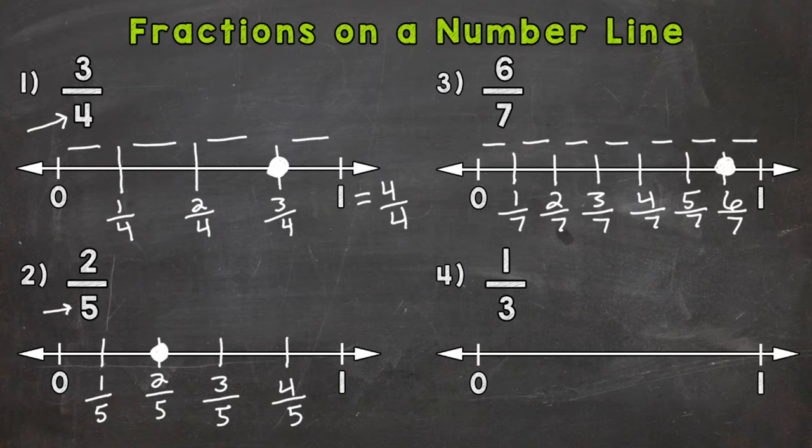And lastly, for number four, we have one-third. So we need to split into three equal pieces or thirds. So one, two, and three. So this is one-third, two-thirds, and three-thirds would be one whole. One-third is right here.